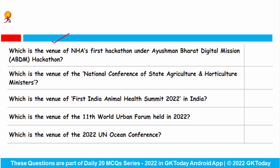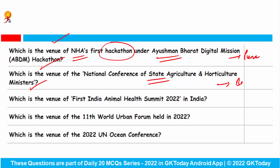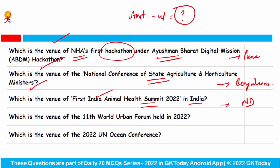What is the venue of the National Health Authority's first hackathon under Ayushman Bharat Digital Mission Hackathon? The answer is Pune. The venue of the National Conference of State Agriculture and Horticulture Ministers Meeting, the first Indian Animal Health Summit 2022 answer is New Delhi. The venue of the 11th World Urban Forum held in 2022 — the answer is Poland.